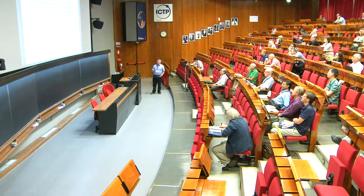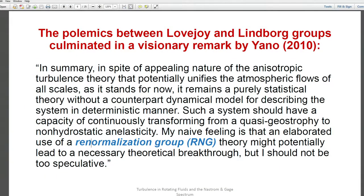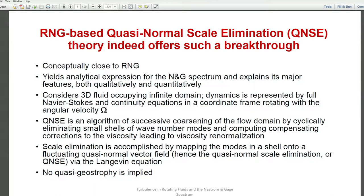The last paper in this series was by Yano, who wrote: 'In summary, in spite of the appealing nature of anisotropic turbulence theory that potentially unifies atmospheric flows of all scales, as it stands it remains a purely statistical theory without a counterpart dynamical model for describing the system in a deterministic manner. Such a system should have a capacity continuously transforming from quasi-geostrophy to non-hydrostatic inelasticity.' He said his naive feeling is that an elaborated use of renormalization group theory of turbulence might potentially lead to a necessary theoretical breakthrough — but he said he shouldn't be too speculative. That was in 2010, and it was kind of visionary, because this is exactly what we did with Simeon — conceptually close to this renormalization group theory.